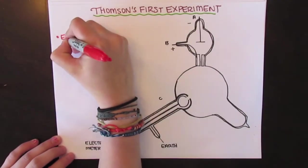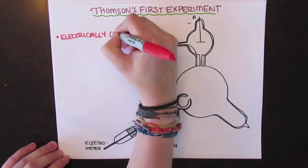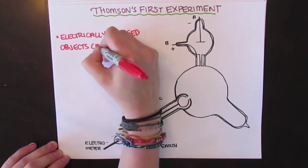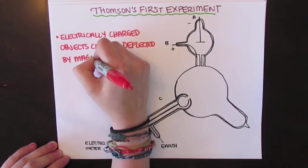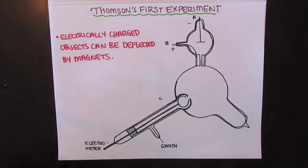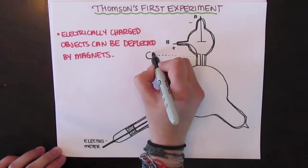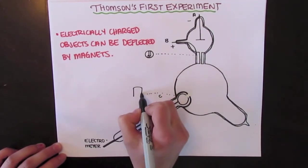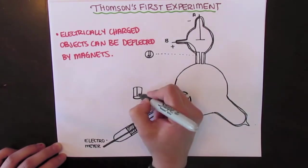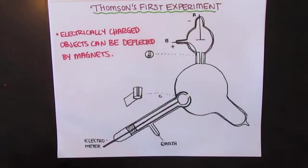In Thomson's first experiment, he wanted to see if he could separate the negative charge out of the rays, as he knew that electrically charged objects could be deflected by magnets. Thomson set up the cathode ray so that a magnet was surrounding it, creating a magnetic field that the cathode ray would pass through. He found that the rays were bent and the negative charge was bent exactly the same.